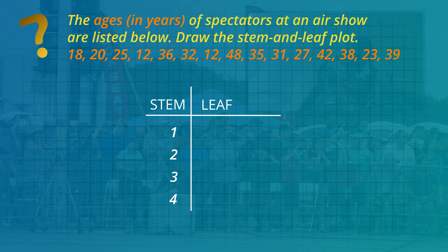Let's write the age of the first person, who is 18 years old. One is the stem and eight is the leaf. Together, one and eight show 18. The next age is 20. The stem is two and the leaf is zero. Together these show the number 20.